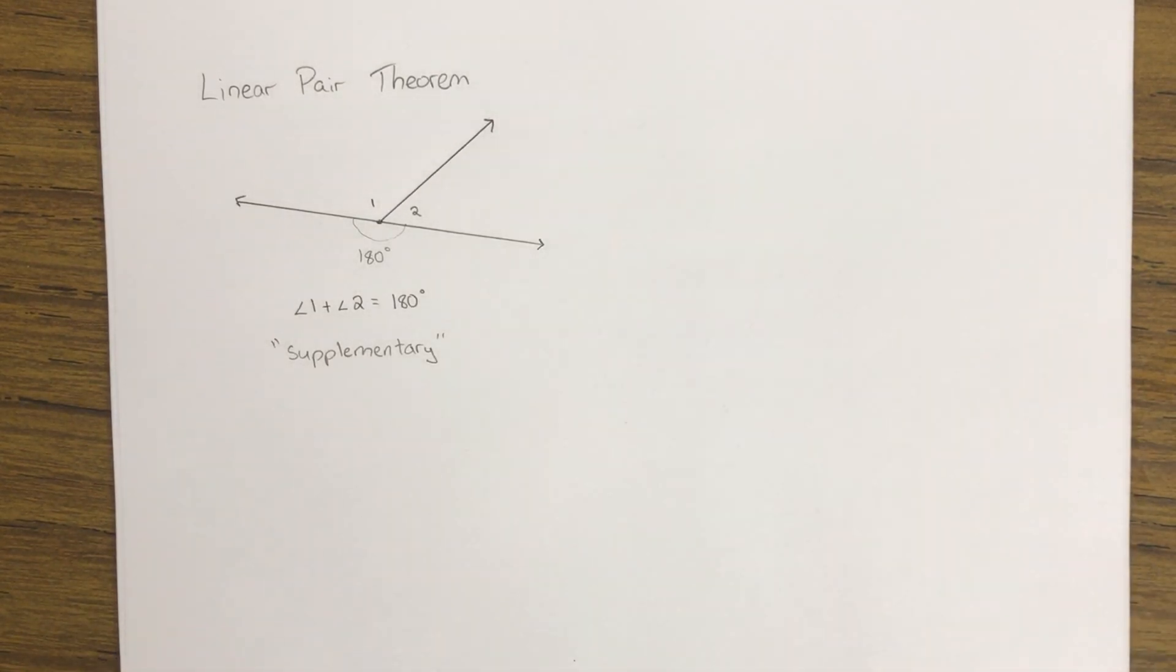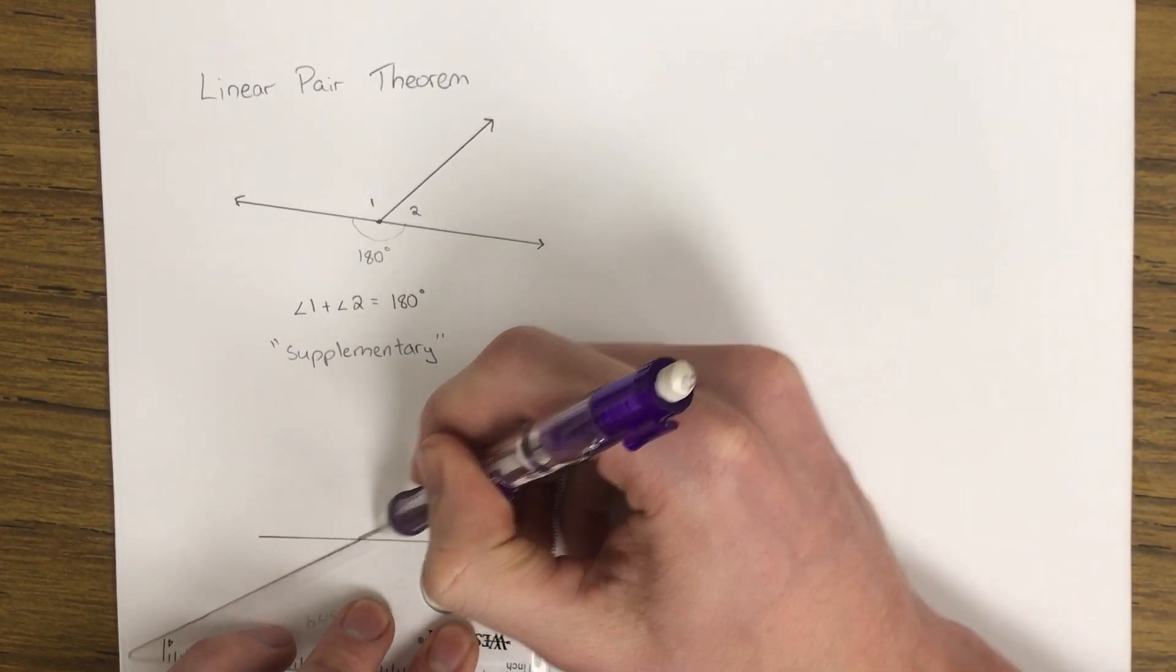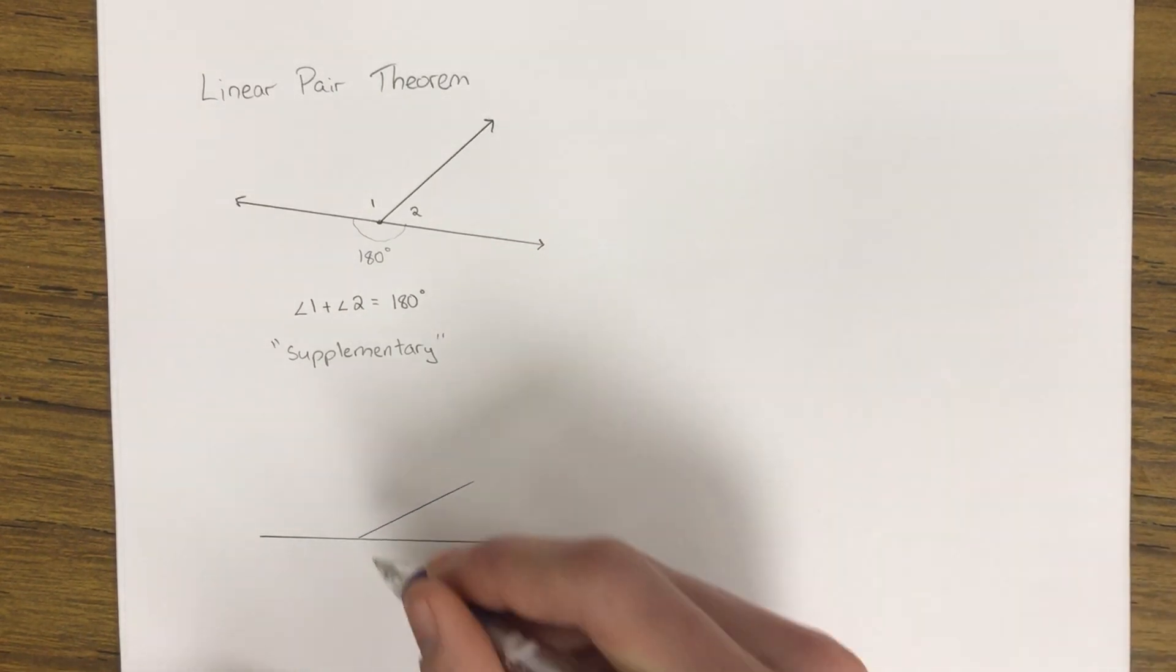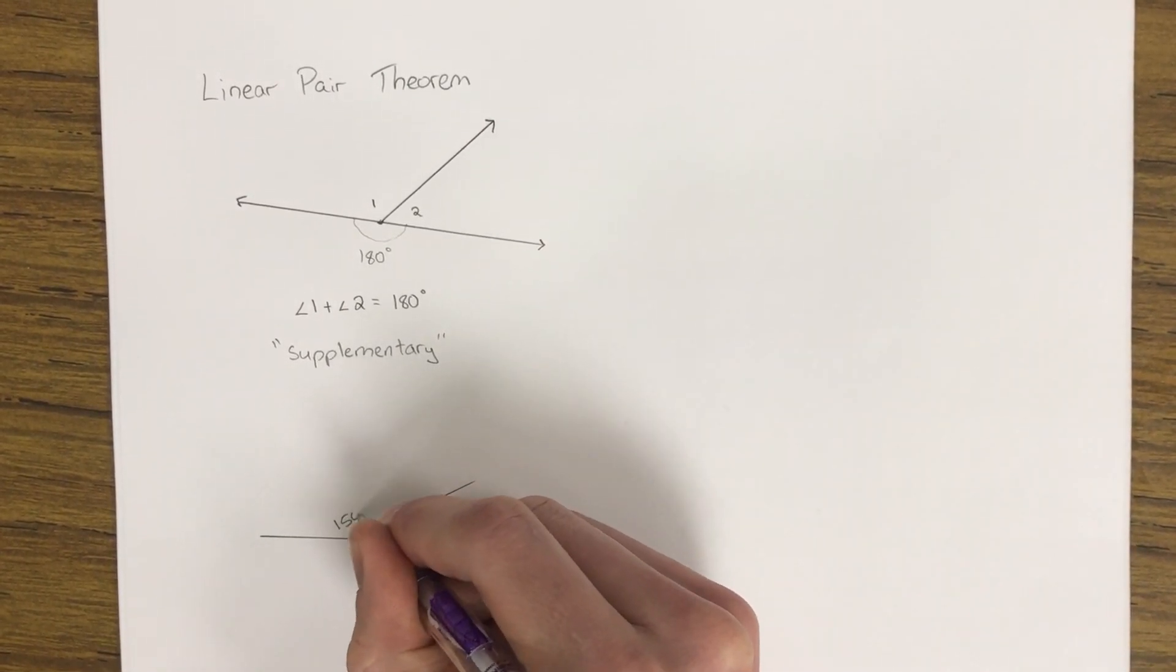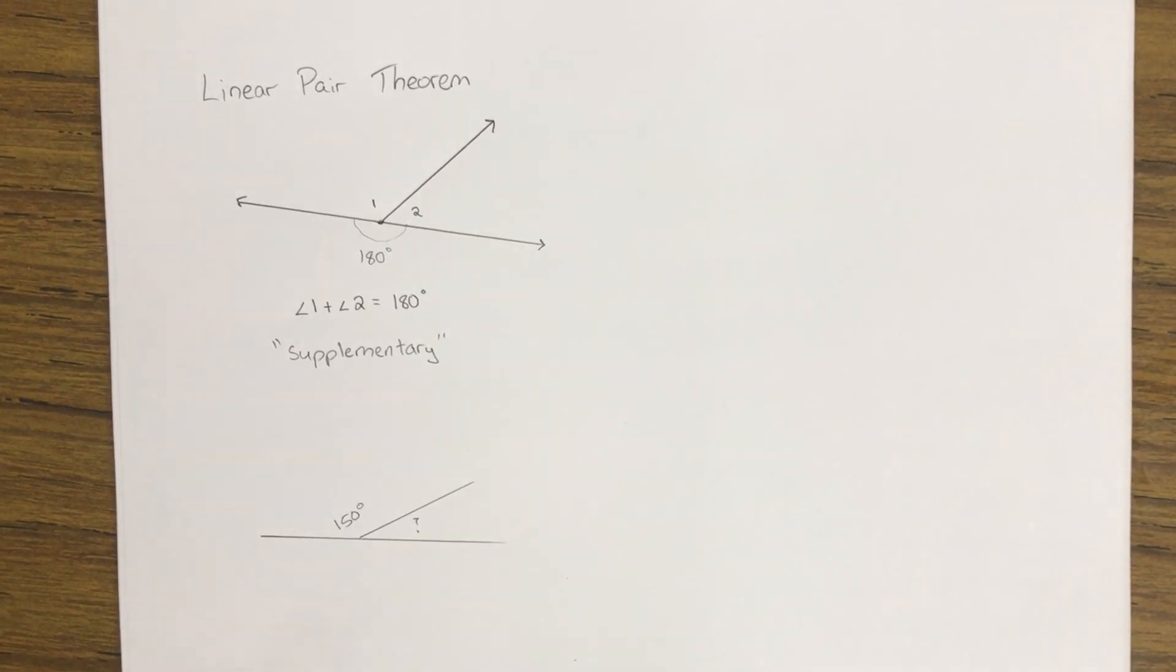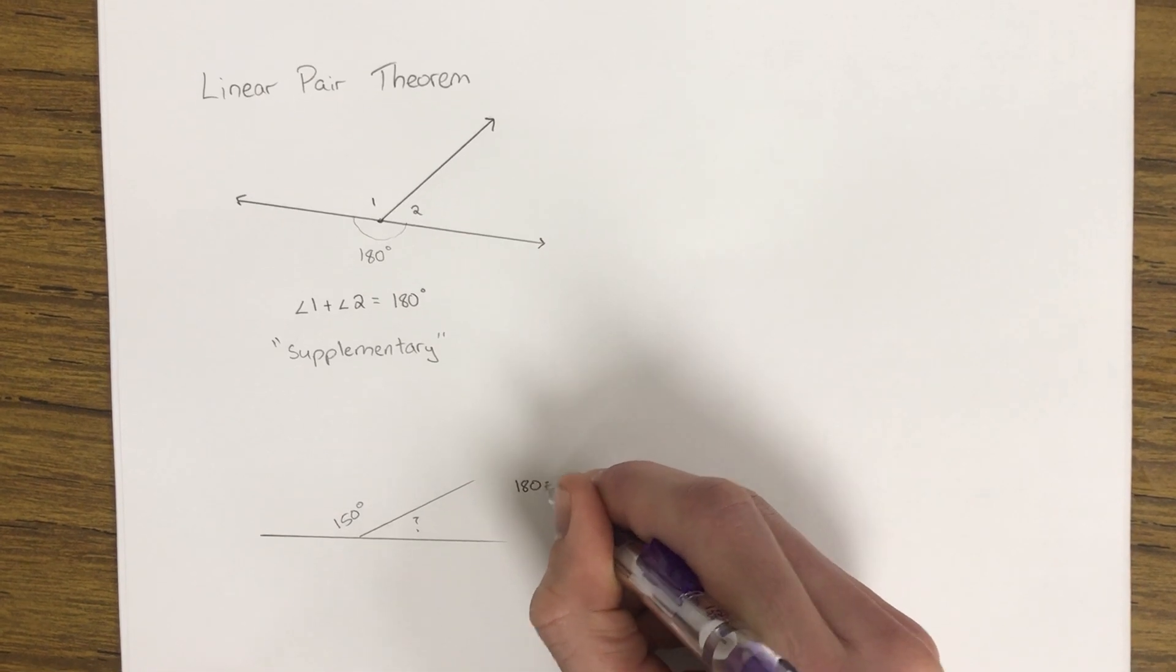An example of where you might see this, we've got a line again divided by an angle and we would say angle 1 over here or this first angle is 150 degrees and we're asked to solve for the missing one. We would say well together they should add up to 180.